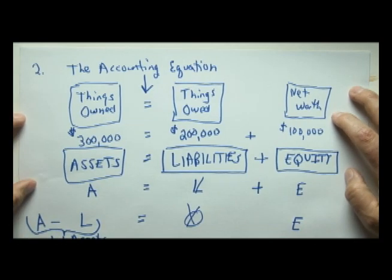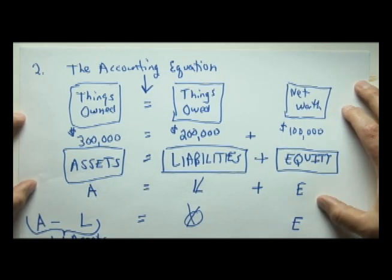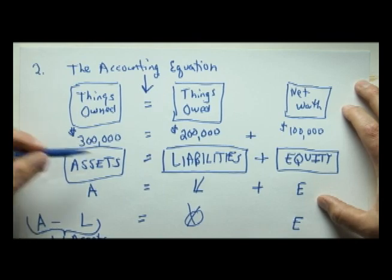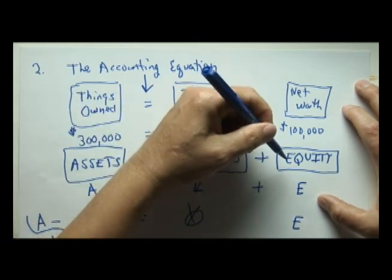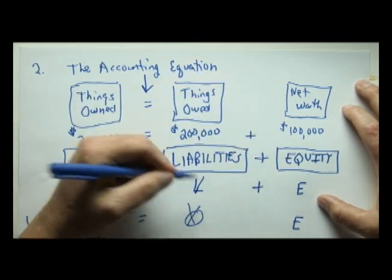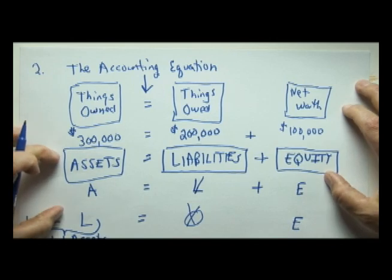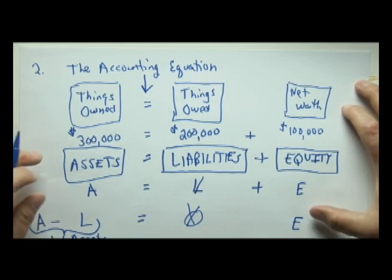To summarize, the fundamental accounting equation is assets equals liabilities plus owner's equity. We can restate this equation as A minus L equals E.